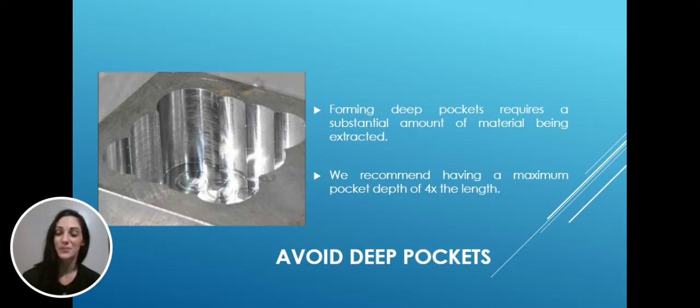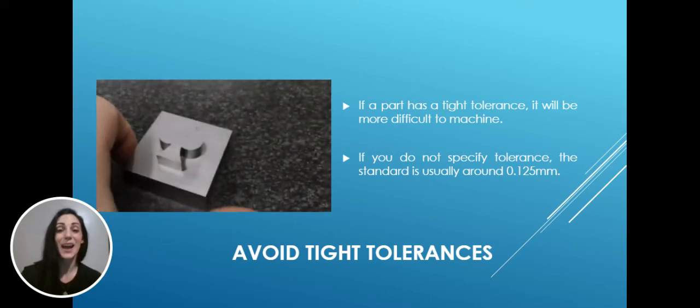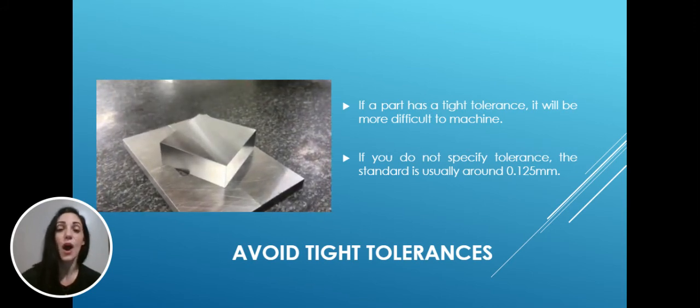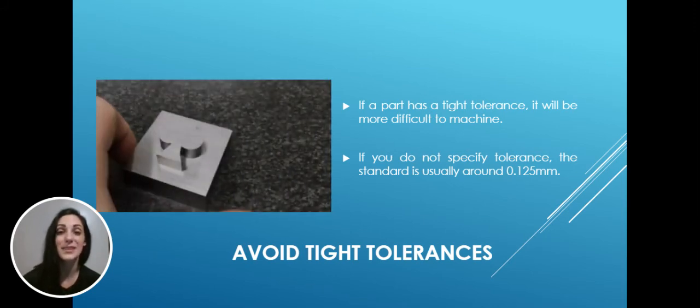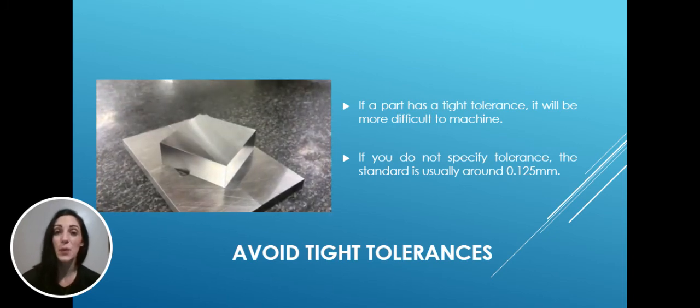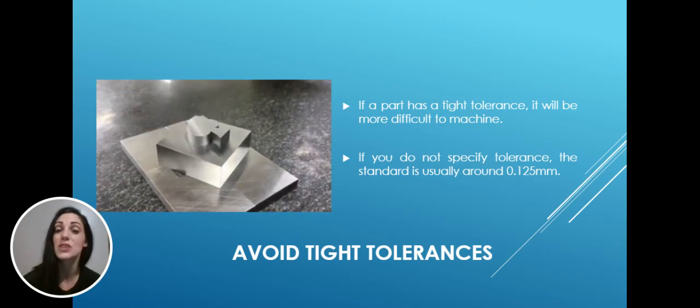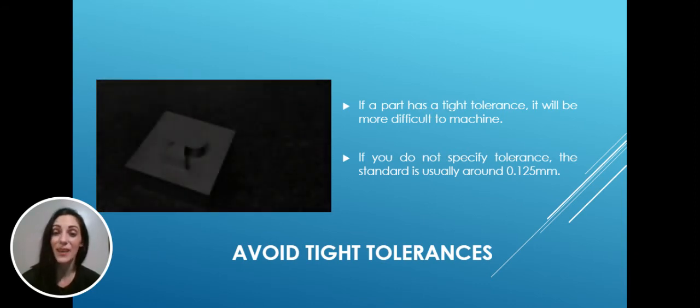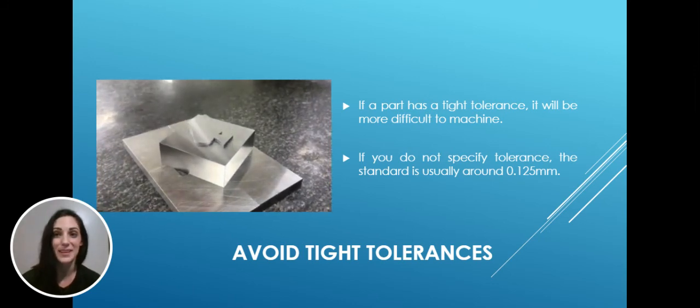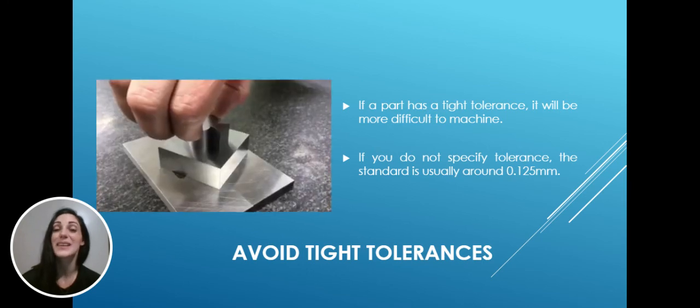The next thing is we would avoid tight tolerances. Now again, your manufacturer will be able to guide you on this during your design phase over what type of tolerance will be best suited to your part. If your part has a tight tolerance, it might be more difficult to machine, taking more time and possibly requiring it to be checked manually. If you do not specify tolerance, the standard is usually around 0.125 millimeters. We recommend only deviating from this standard when necessary.